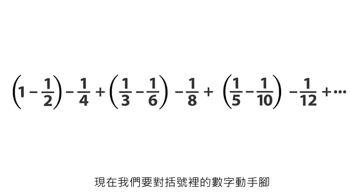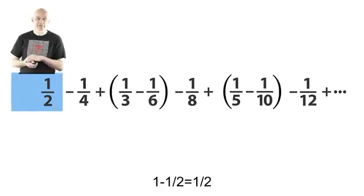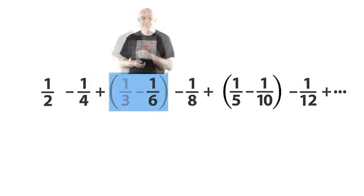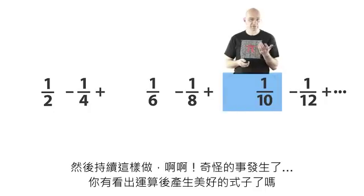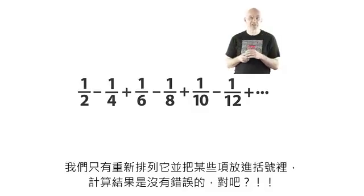Now we're going to work our way through the brackets. So first one here, 1 minus 1/2 is 1/2. 1/3 minus 1/6 is 1/6, and so on. You can see how this works. Nice pattern here. So we've just rearranged the terms and we re-bracketed them a little bit, and that should not change anything about the sum of this thing.